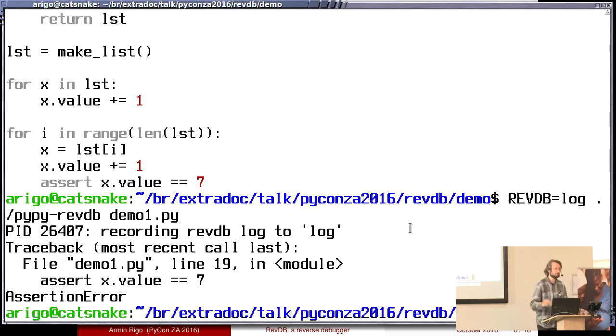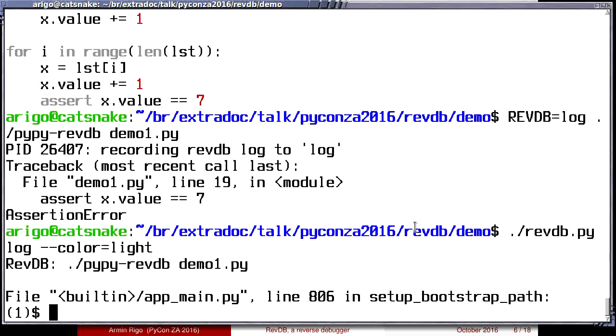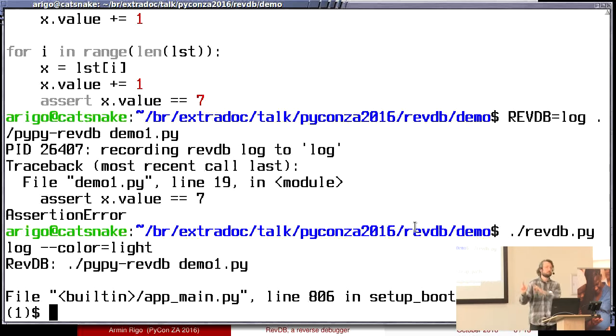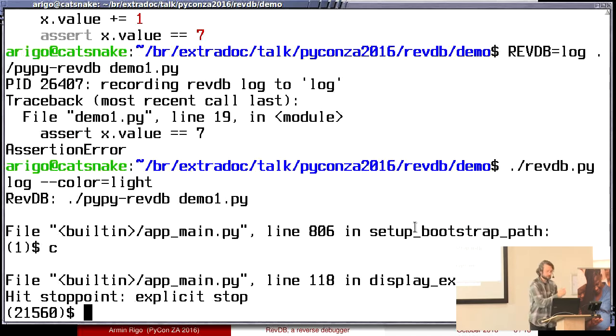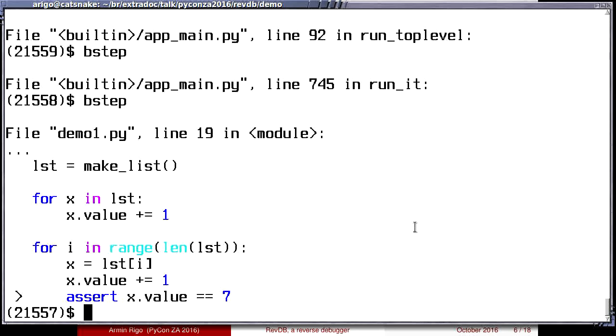So that means you would just repeat this step. You do what I just did in a loop and run it until you get an exit code or something. But the point is that as soon as you manage to have one run which fails in the way that you're interested in debugging, then you have this file, here the file called log, and you fire the reverse debugger on log. Color equal light for the syntax highlighting. So now I'm in the debugger, and the number one is time.